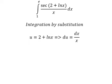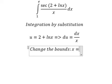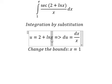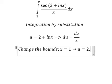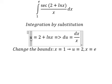Next we need to change the bounds. When x equals to number one, so we put number one here and we have number zero, so u equals to number two. When x equals to e, we put e here and we have u equals to number three.